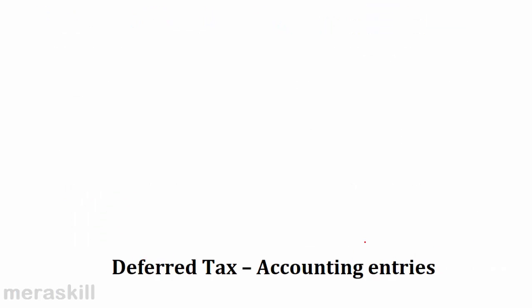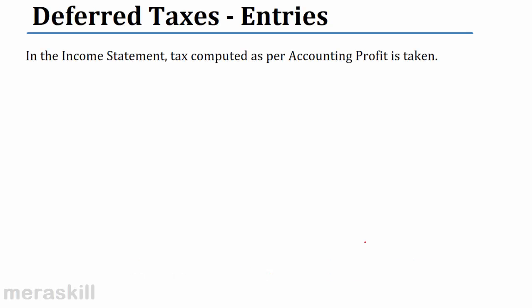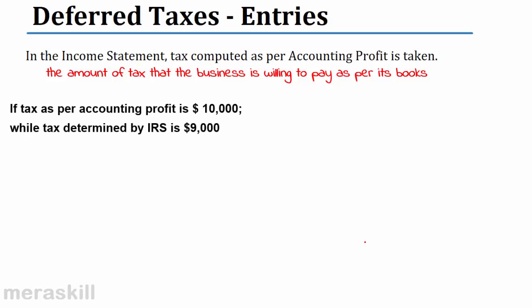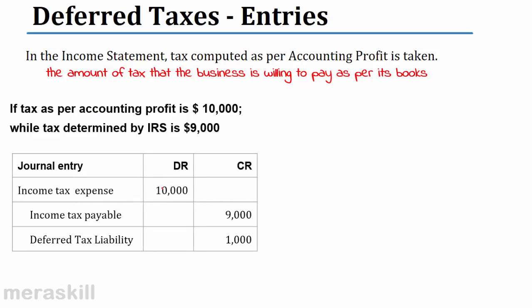Let us look at the accounting entries in the income statement. Tax computed as per accounting profit is taken — the amount of tax the business is willing to pay as per its books. In the income statement, if tax as per accounting profit is $10,000 while the tax determined by IRS is $9,000, income tax expense is $10,000 but tax payable according to IRS is only $9,000.